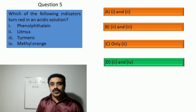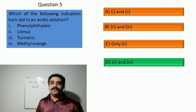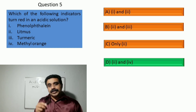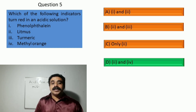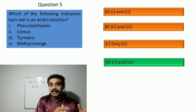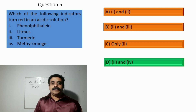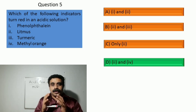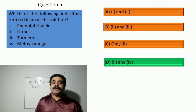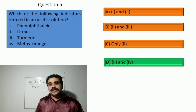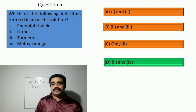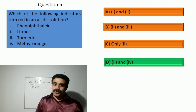The correct answer is option D, 2 and 4, because in acidic solution litmus turns red, and at the same time methyl orange also gives a red color in acidic solution.